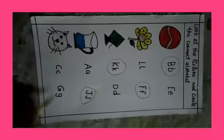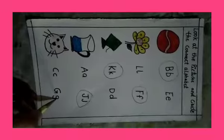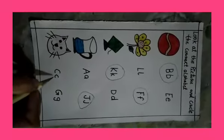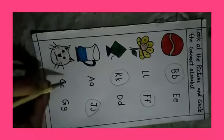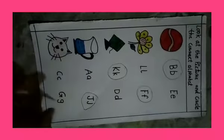Last picture. See. What is this? Cat. Is this right alphabet? No. It is G. G is wrong alphabet. C. C is correct alphabet. C for cat. So we will circle C.